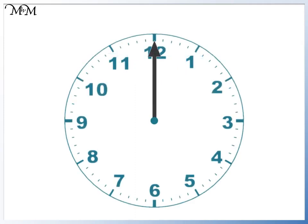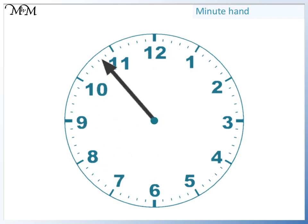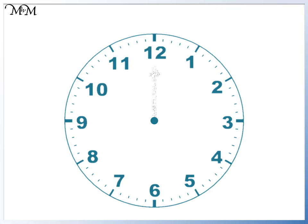This is the minute hand. It tells us how many minutes have passed. When it completes a full turn, this means that a whole hour has passed. This is the hour hand. It tells us how many hours have passed.